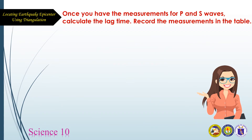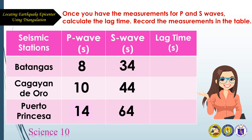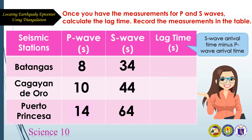Once you have the measurements for P and S waves, calculate the lag time and record the measurements in the table. Lag time equals S wave arrival time minus P wave arrival time. For Batangas: 34 minus 8 equals 26 seconds. For Cagayan de Oro: 44 minus 10 equals 34 seconds. For Puerto Princesa: 64 minus 14 equals 50 seconds.